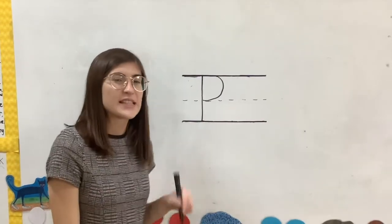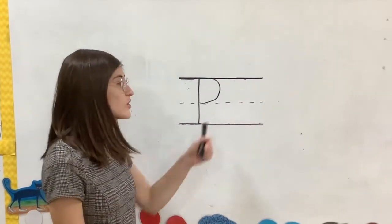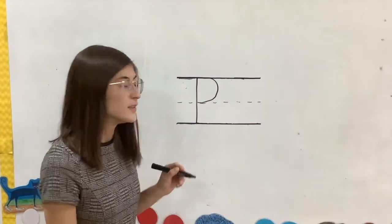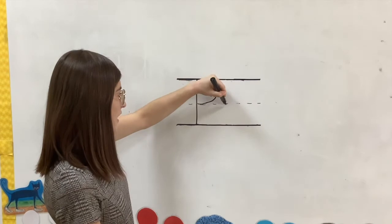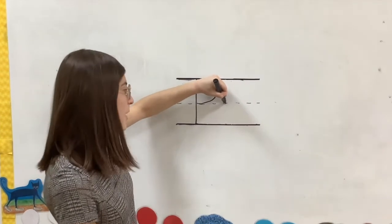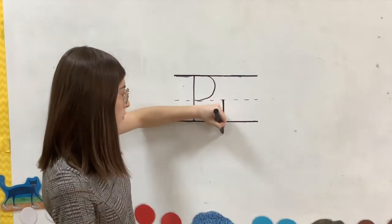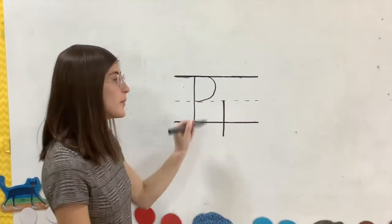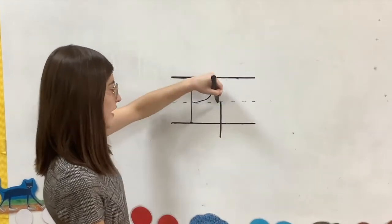Now for lowercase p, it goes all the way down past the line. So we're starting in the middle and we make a straight line down but we go past the bottom like this. And then we make another bump but this time in the bottom half of our handwriting lines like this.